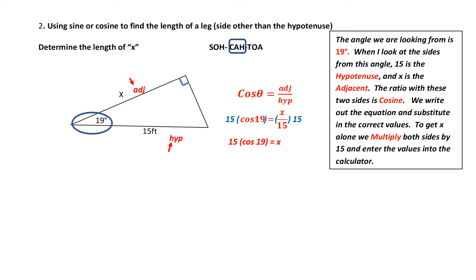I'm now ready to punch this into my calculator. With an on-screen calculator, you would punch in 15 multiplied by the cos of 19 degrees equals, and you should get an answer of 14.2 feet.